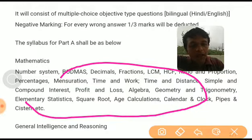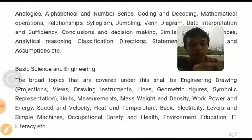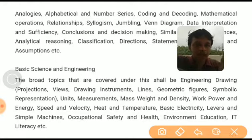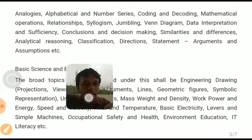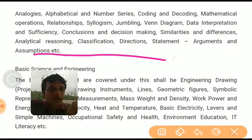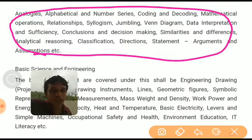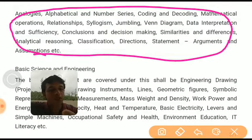The next topic is general intelligence and reasoning. The subtopics include: analogies, alphabetical and number coding, number series, coding and decoding, mathematical operations, relationships, syllogism, jumbling, Venn diagram, data interpretation and sufficiency, conclusions, decision making, similarities and differences, analytical reasoning, classification, direction, statement arguments and assumptions. These cover verbal and non-verbal reasoning questions.